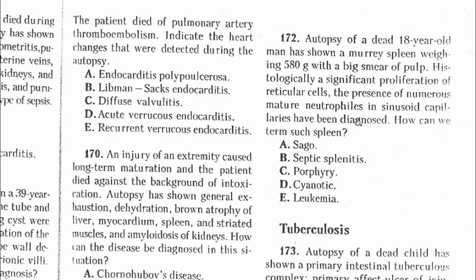Question 172: Autopsy of a dead 18-year-old man has shown a murky spleen weighing 580 grams with a big smear of pulp. Histologically, significant proliferation of reticular cells and numerous mature neutrophils in sinusoidal capillaries were diagnosed. The production of a large creep of pulp by the spleen is termed septic splenitis. The answer is B.